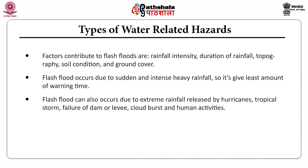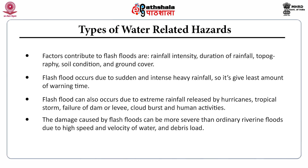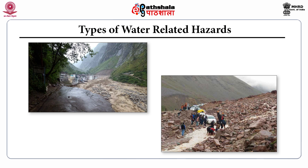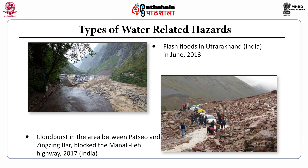Flash floods occur due to sudden and intense heavy rainfall, giving the least amount of warning time. Flash floods can also occur due to extreme rainfall released by hurricanes, tropical storms, failure of a dam or levee, cloudbursts and human activities. The damage caused by flash floods can be more severe than ordinary riverine floods due to the high speed and velocity of water and debris. These pictures show the consequences of flash floods: the first is the flash flood in Uttarakhand, India in June 2013, and the other shows a cloudburst between Pestro and Zing Zing Bar that blocked the Manali-Leh Highway in 2017.